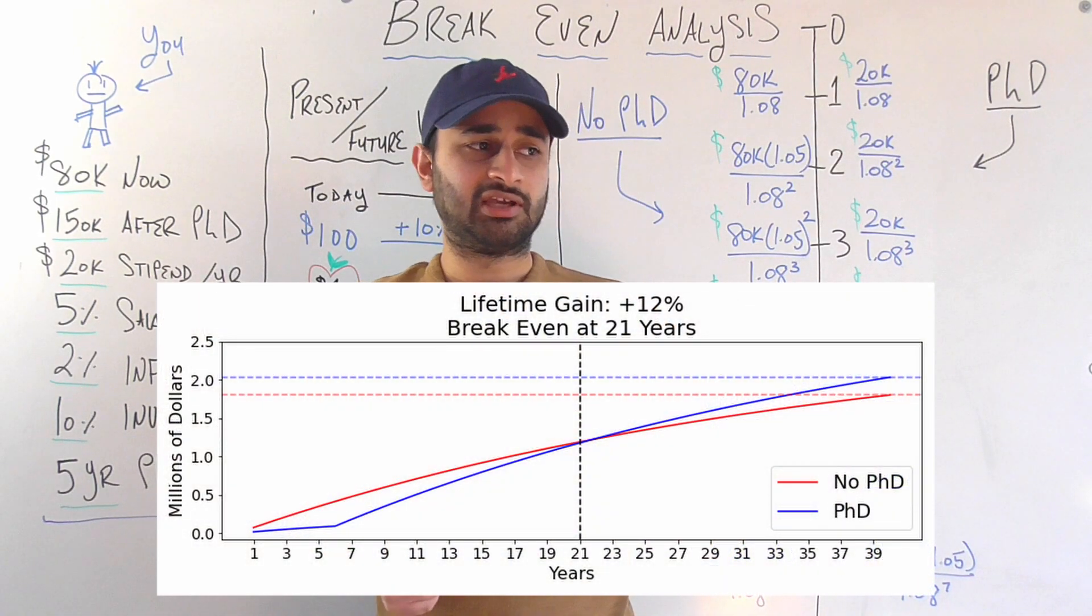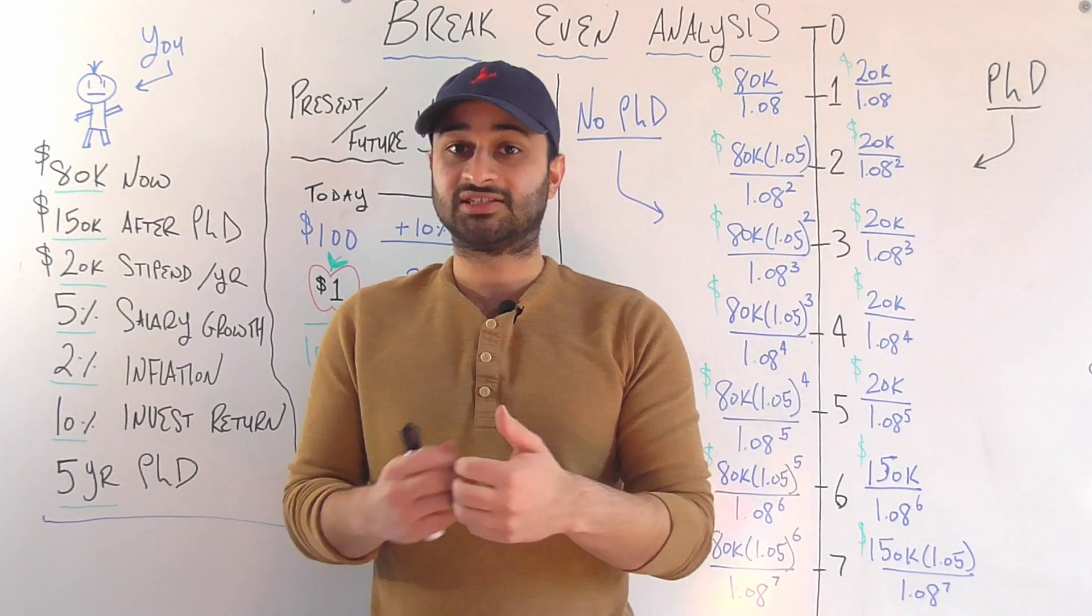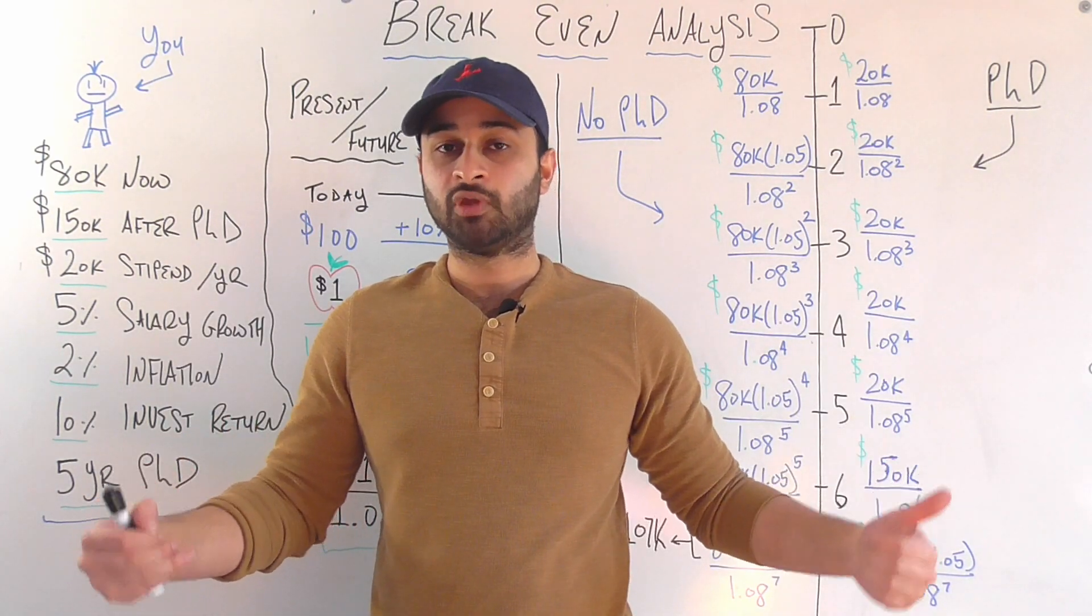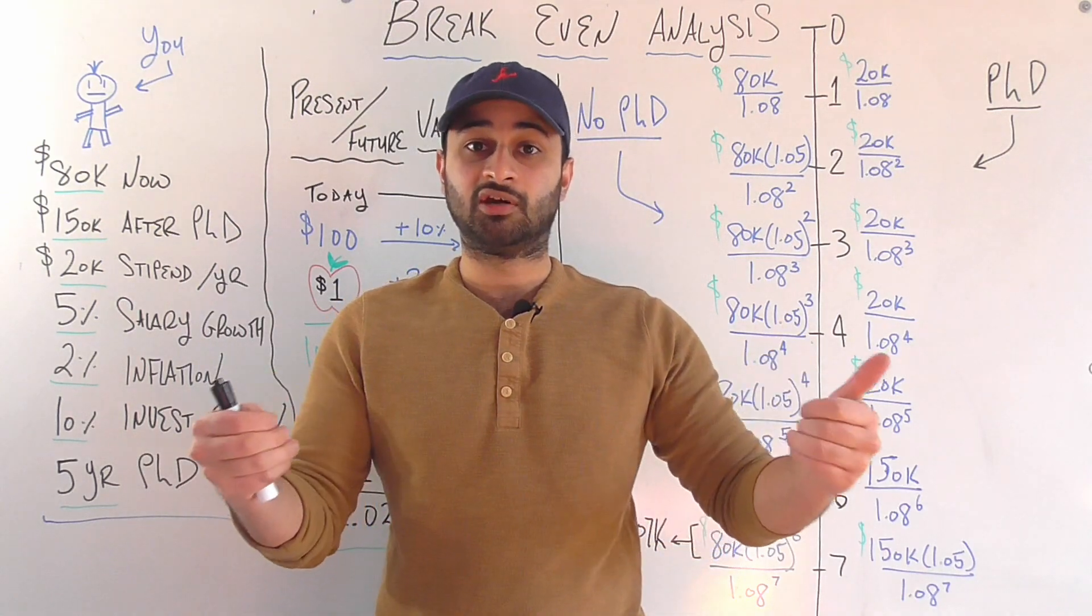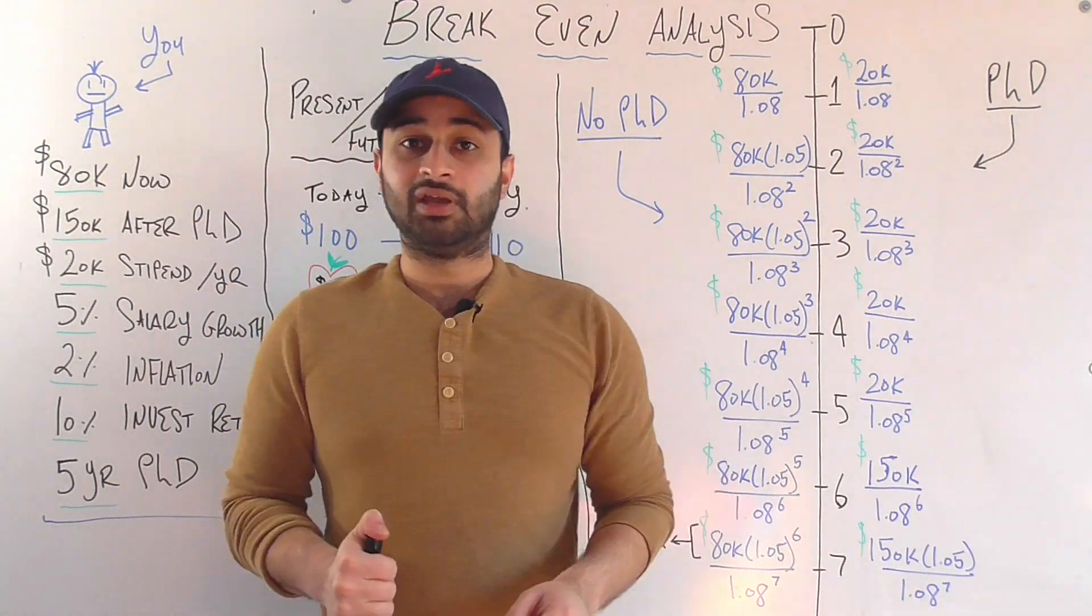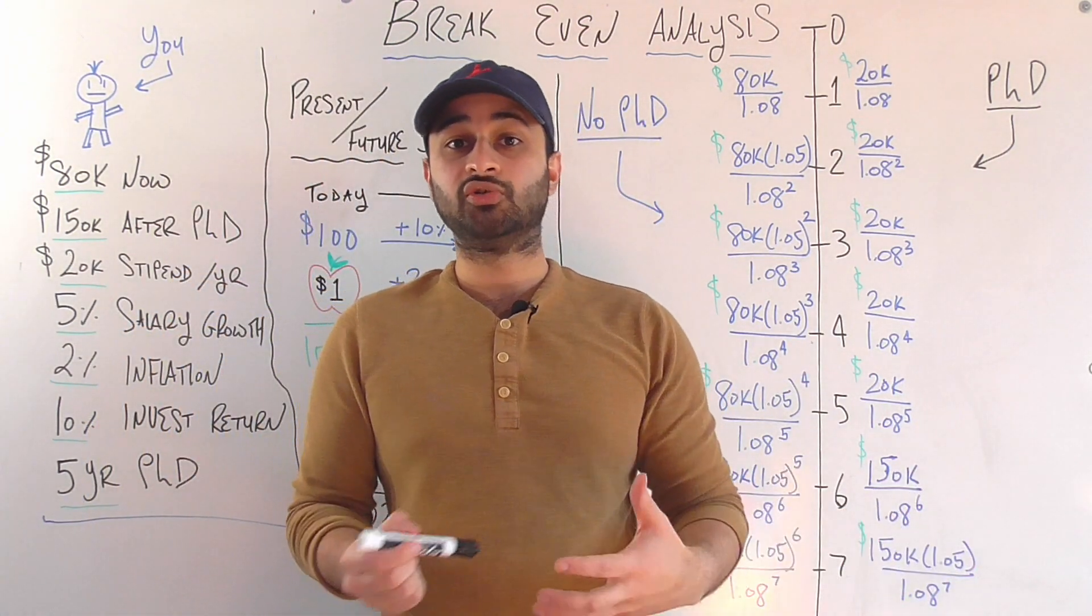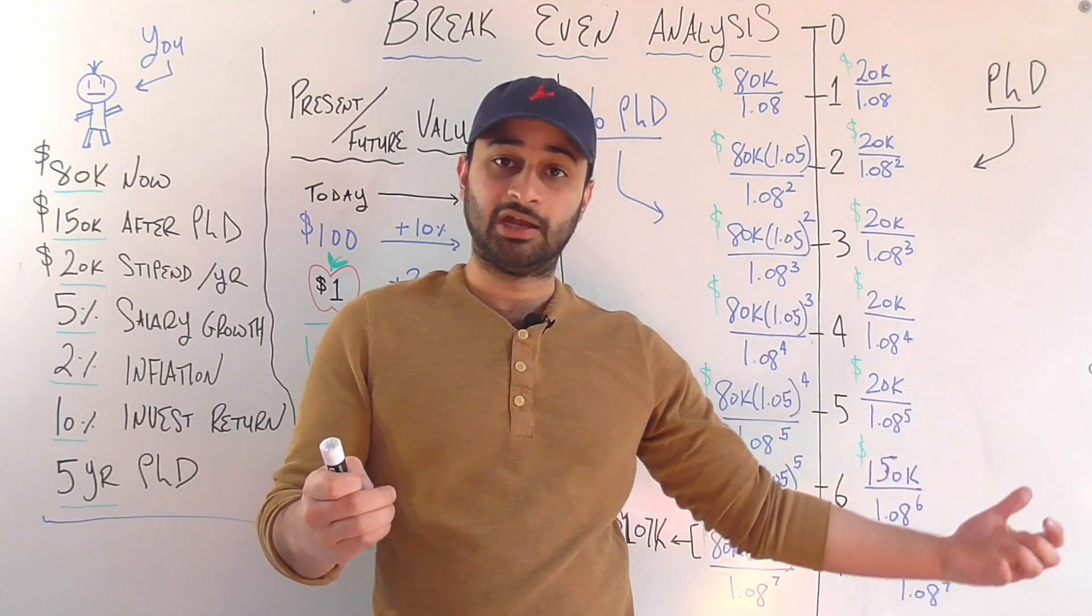So the very interesting thing is that an extra year of PhD, one extra year of PhD, takes six extra years to break even. And the reason is that for that extra year you're getting your PhD, you're missing out on this much higher full-time salary if you stuck to working your $80,000 job where you're getting raises. So there's an opportunity cost for every extra year of education you're getting.